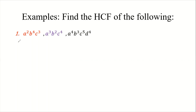Therefore, for the HCF, when we look at all the a's, this one is raised to the second power, this one to the third, and this one to the fourth. The one with the lowest degree is a², so we take that. Then we look at the b terms — b is common to all three. The powers are four, two, and three, so the lowest is b².